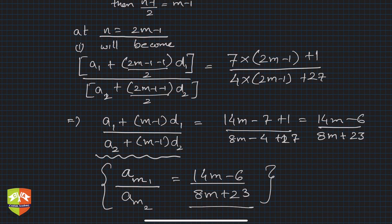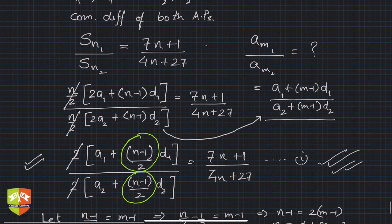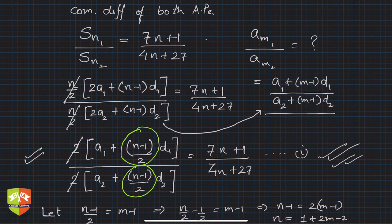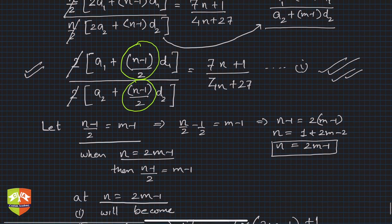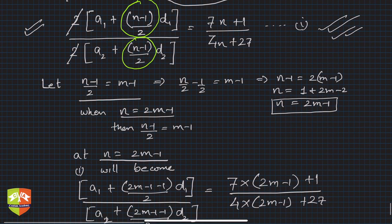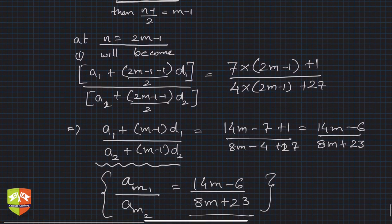That is the ratio of the mth term of the first AP to that of the second AP. To summarize: don't cross-multiply the given condition — you cannot find a1, d1, a2, d2 individually since there are four variables and only one equation. Instead, transform one expression into the other. Here, substituting n = 2m-1 converts the sum ratio into the required term ratio on the left-hand side, and you substitute the same value on the right-hand side to get the answer.